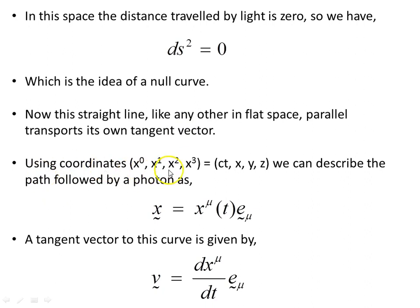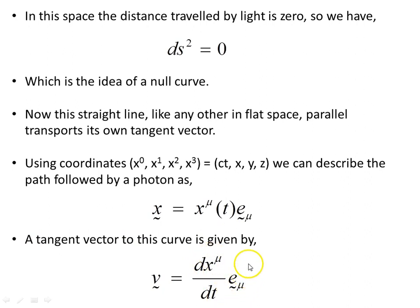Using coordinates x⁰, x¹, x², x³ = ct, x, y, z — where t is coordinate time — we can describe the path followed by a photon as x = xᵘ(t), with basis vectors eᵘ. A tangent vector to this curve is given by v = (dxᵘ/dt)eᵘ. In flat spacetime, these basis vectors are constant, so their derivative is zero and we don't need to worry about it. In curved spacetime that is not correct — the derivative of the basis vectors will be non-zero from point to point.